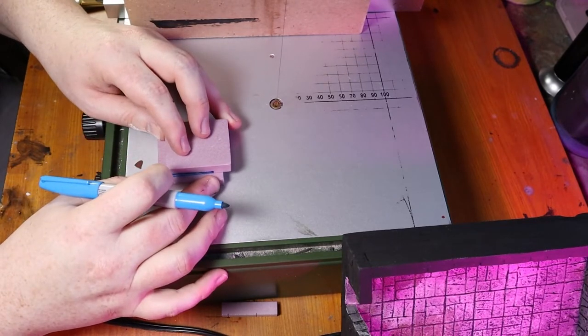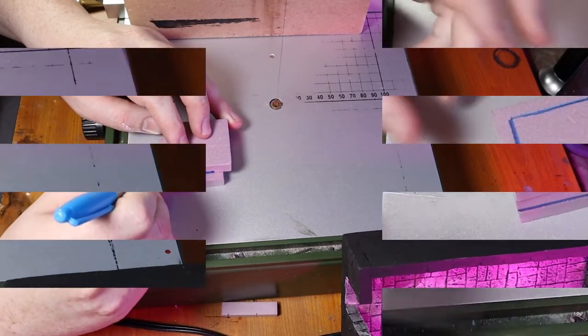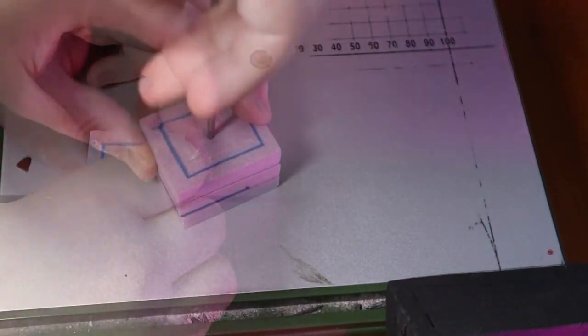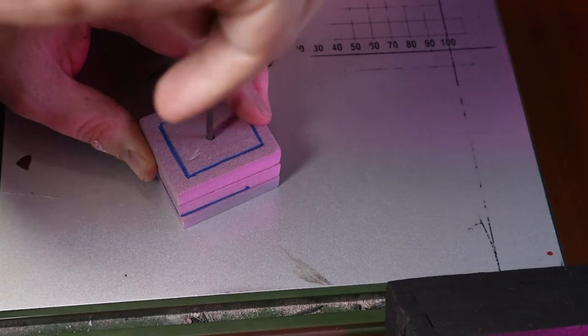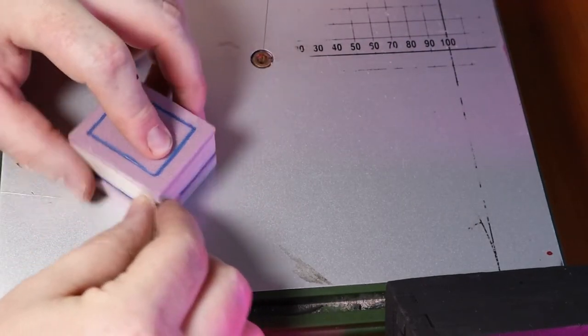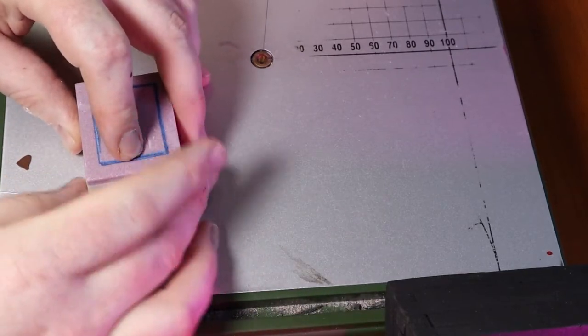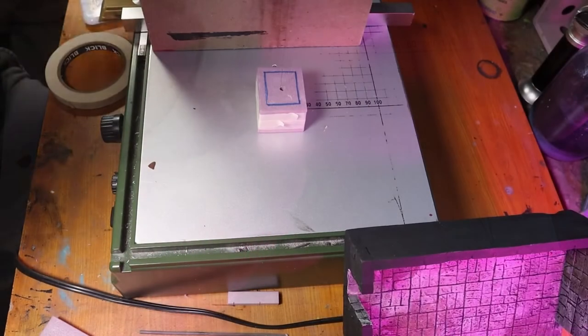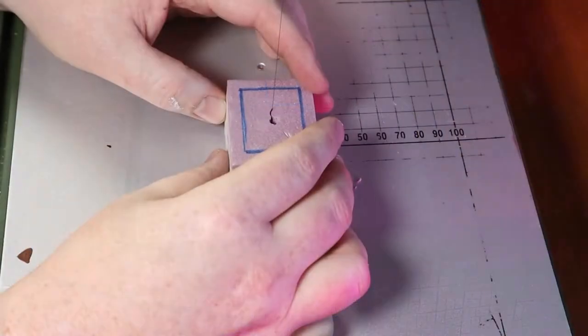I do an inner square, just eyeballing it, not getting bogged down by measurements. I stack the pieces of styrofoam and drill a hole through all three pieces. Then I use masking tape to attach all the pieces together so I can cut them all at the same time.